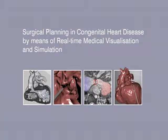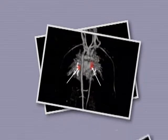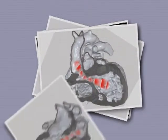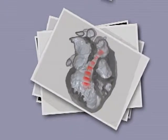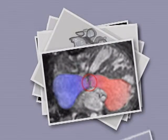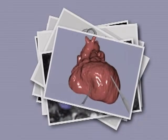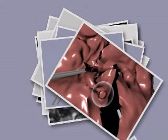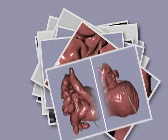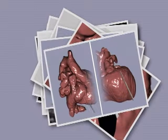About one in every 120 babies is born with some form of heart defect. This animation is intended to show how different real-time computer graphics techniques have emerged as important tools to aid in the diagnostic and surgical planning processes in patients with congenital heart disease.